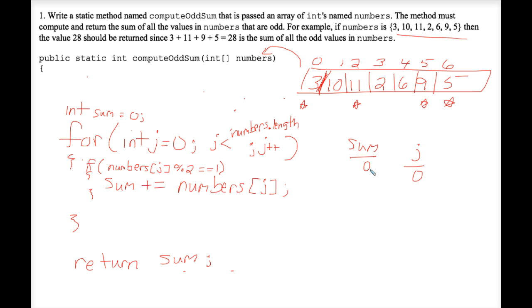So back to tracing this. Numbers j mod two. Well, currently in the zero position is the number three. So we're asking if three modded by two double equals one. Well, the remainder of three divided by two is indeed one. So therefore, this if statement is true. And the three at this point does get added into sum.